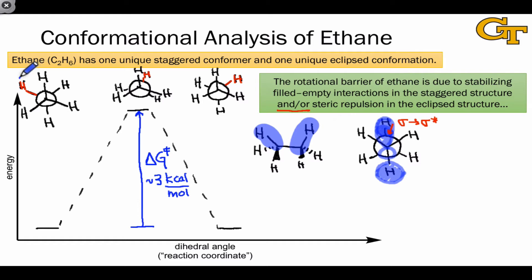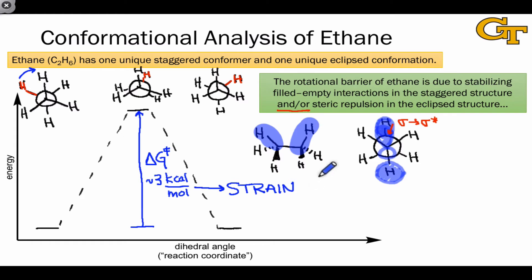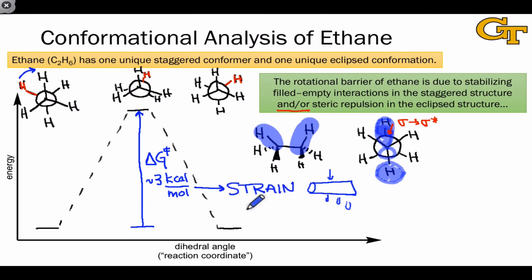Rotation about the central C-C bond in ethane causes an increase in the energy of the molecule—in this case, 3 kilocalories per mole—and that energy increase is referred to as strain. Strain is defined as the energy increase due to a conformational change from an ideal or lowest energy structure. The kind of strain here involves a twisting motion of one carbon with respect to another, analogous to squeezing and twisting a wet rag. Because a twisting motion—the fancy term for which is torsion—is at the heart of this, it is referred to as torsional strain.